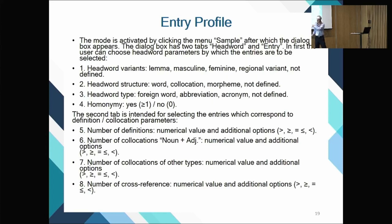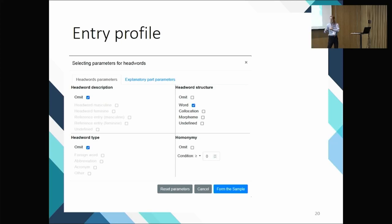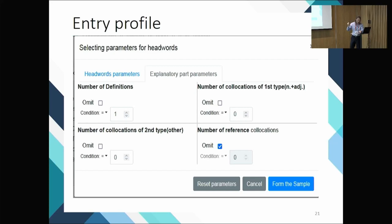You have conditions such as more than, equal to, or less than something. This is the interface of the first phase built to search the dictionary — you put in parameters, omit or include certain things, and click to search the Spanish dictionary. These are the parameters available for headwords.